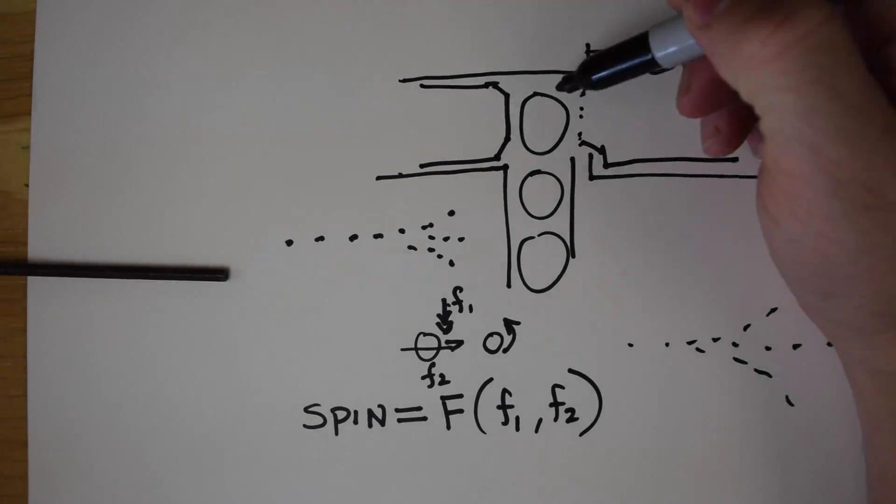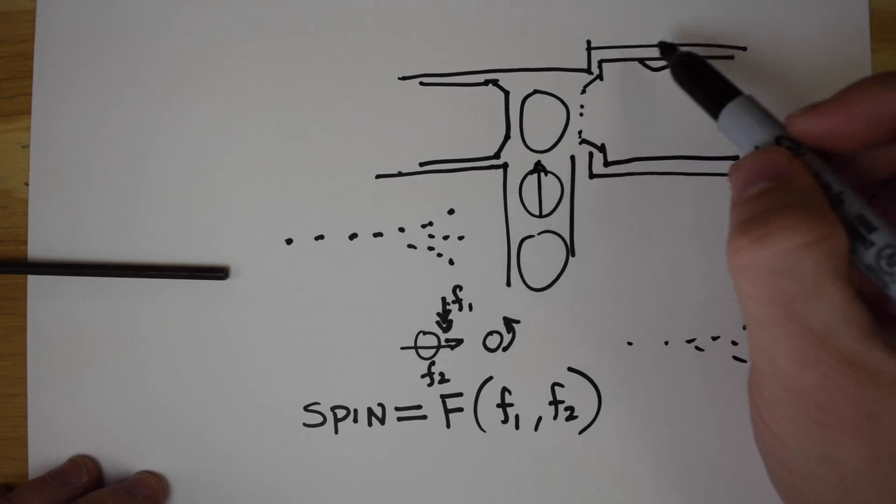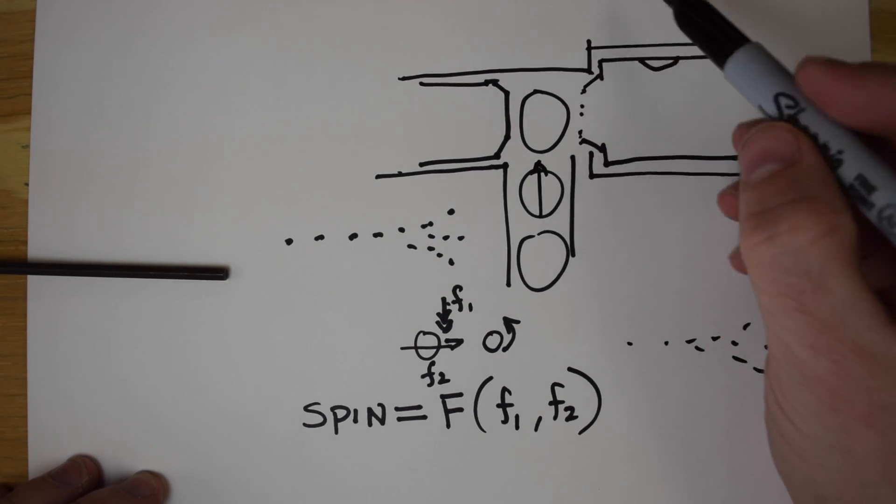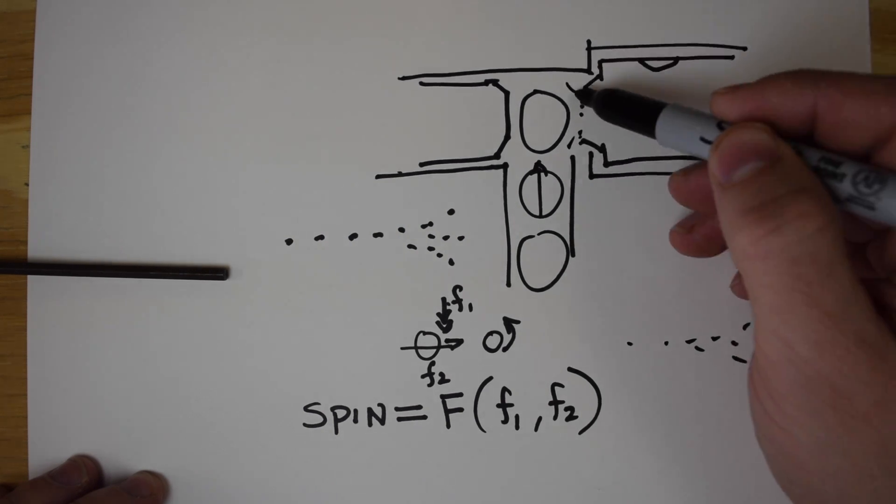What that means is that as the nozzle is pushing forward, sometimes because of the BB's pushing up and other forces in the system, the BB's actually going to start shooting before the nozzle fully seals.